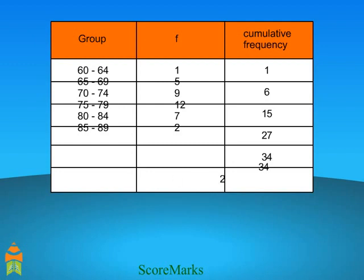For example, the cumulative frequency of first group is 1. Second group is 1 plus 5, that is 6. Third group is 1 plus 5 plus 9, that is 15. And so on. The last cumulative frequency obtained will be the N.